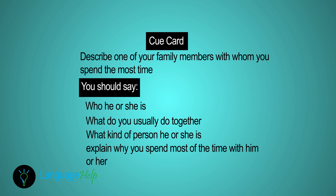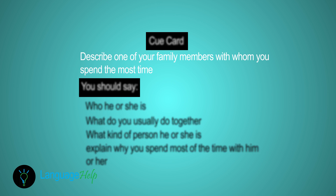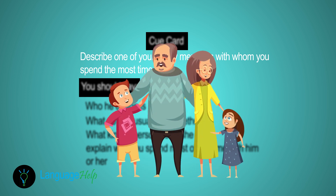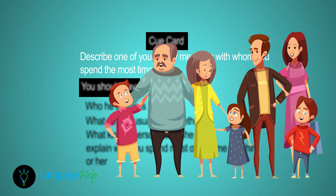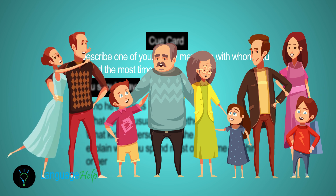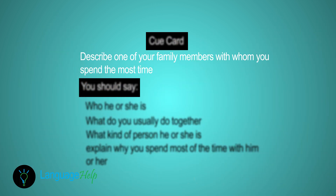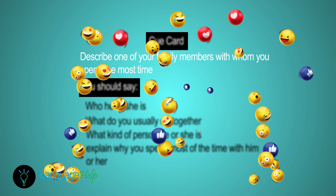Not all questions will be familiar to you, and you're not expected to tell the truth, so use your imagination. Today's cue card question is to describe one of your family members with whom you spend the most time. To answer this question, think of family vocabulary: grandparents, parents, grandchildren, brothers, sisters, siblings, uncles, aunts, and cousins. Also think of relationships and feelings: love, hate, like, dislike, admiration, and so on.